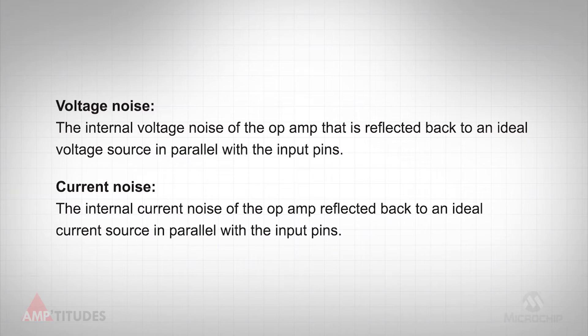Let's clarify these two noise specifications. Voltage noise is defined as the internal voltage noise of the op amp that is reflected back to an ideal voltage source in parallel with the input pins. Similarly, current noise is defined as the internal current noise of the op amp reflected back to an ideal current source in parallel with the input pins.